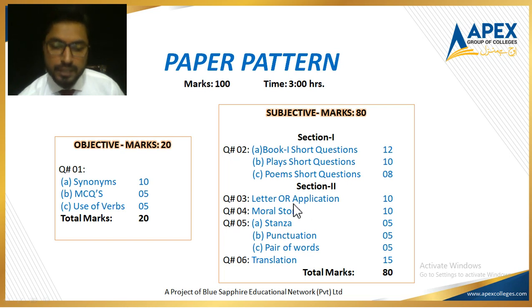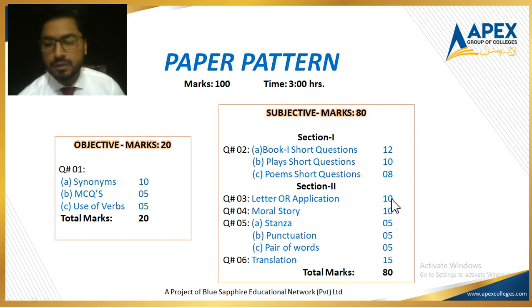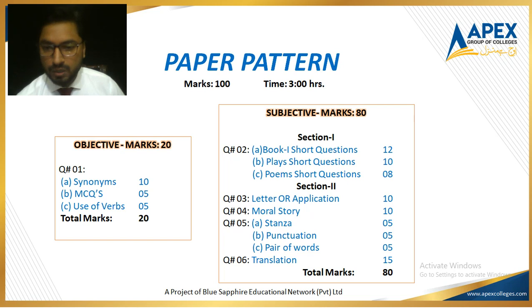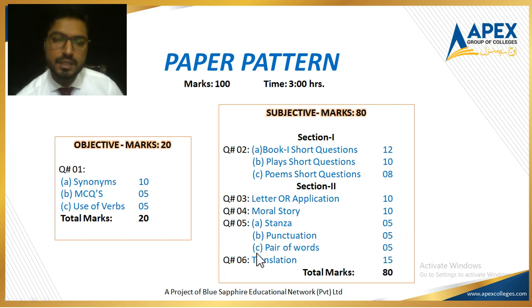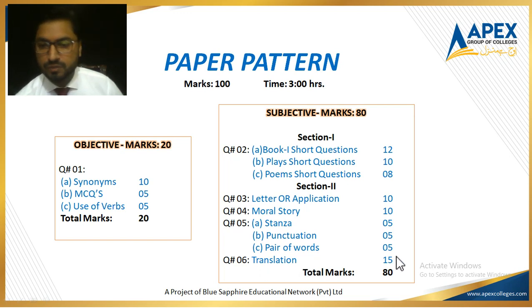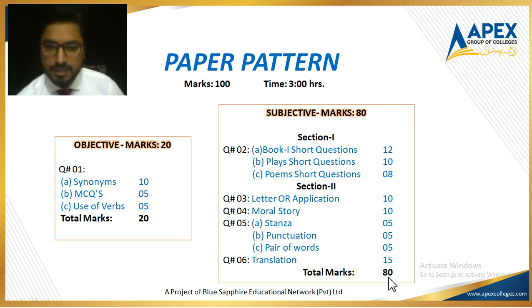Section two: Question three — letter or application, there is choice between letter and application, of 10 marks. Question four — moral story: you will have two morals and write a story on any one, of 10 marks. Question five is divided into three parts: A — stanza of five marks; B — punctuation of five marks; C — pair of words of five marks. Question six is the last and major question — translation, of 15 marks. Total subjective is 80 marks. 80 plus 20 equals 100 marks — this is the complete paper pattern.